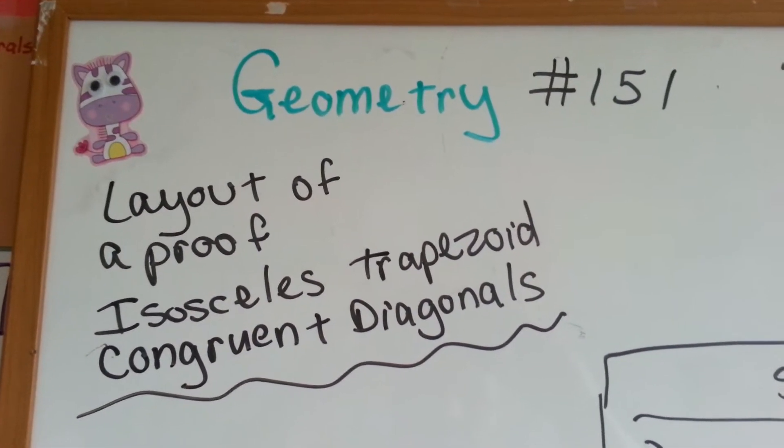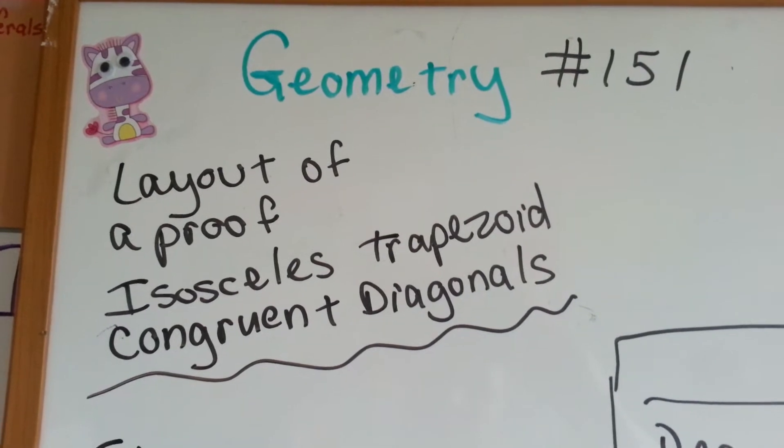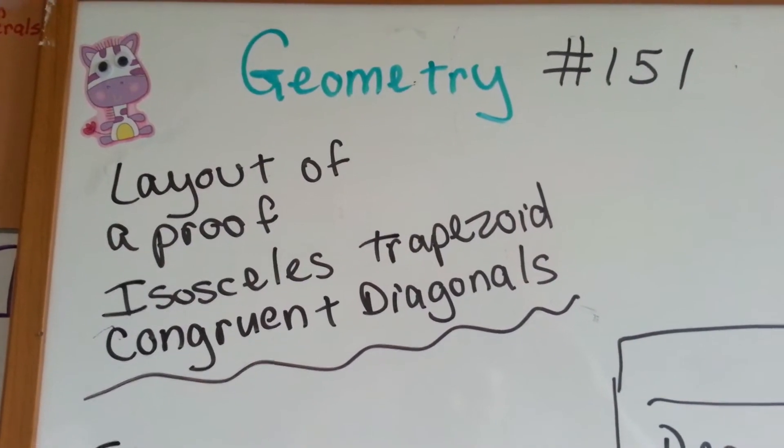Geometry number 151. Layout of a proof, isosceles trapezoid, congruent diagonals.